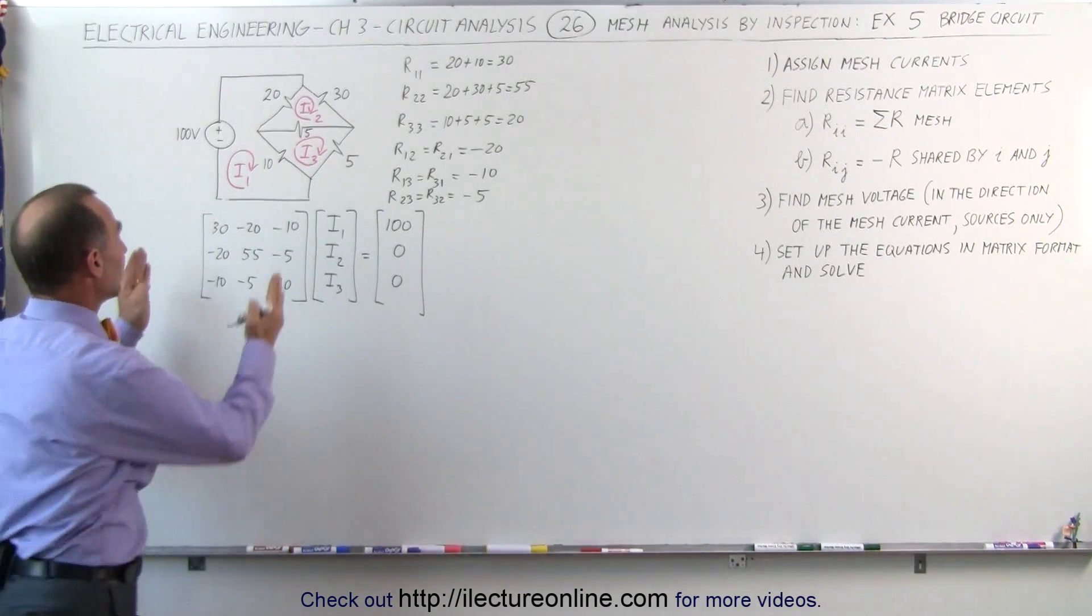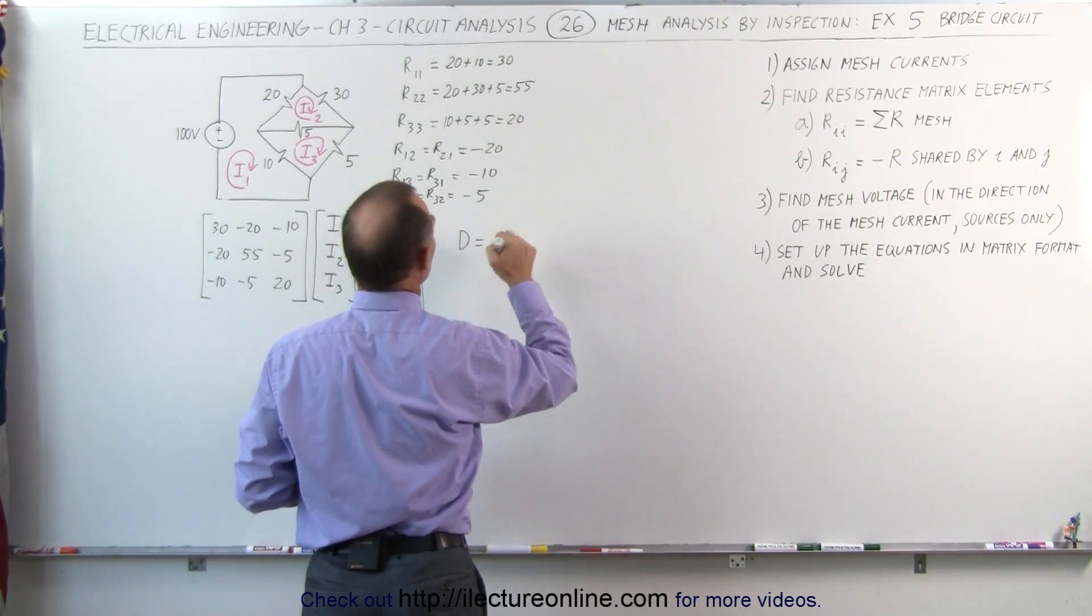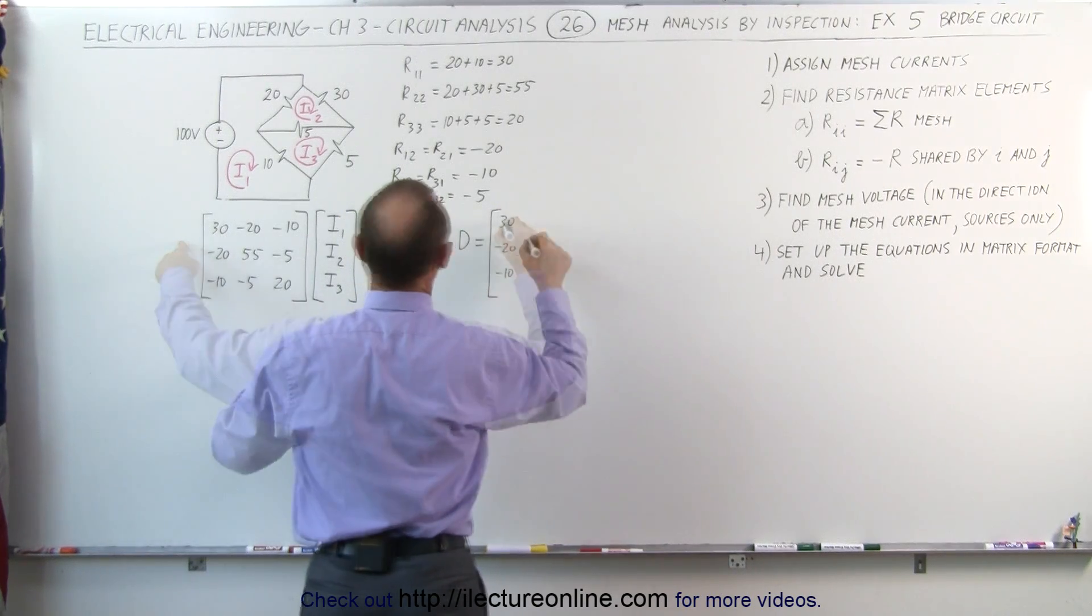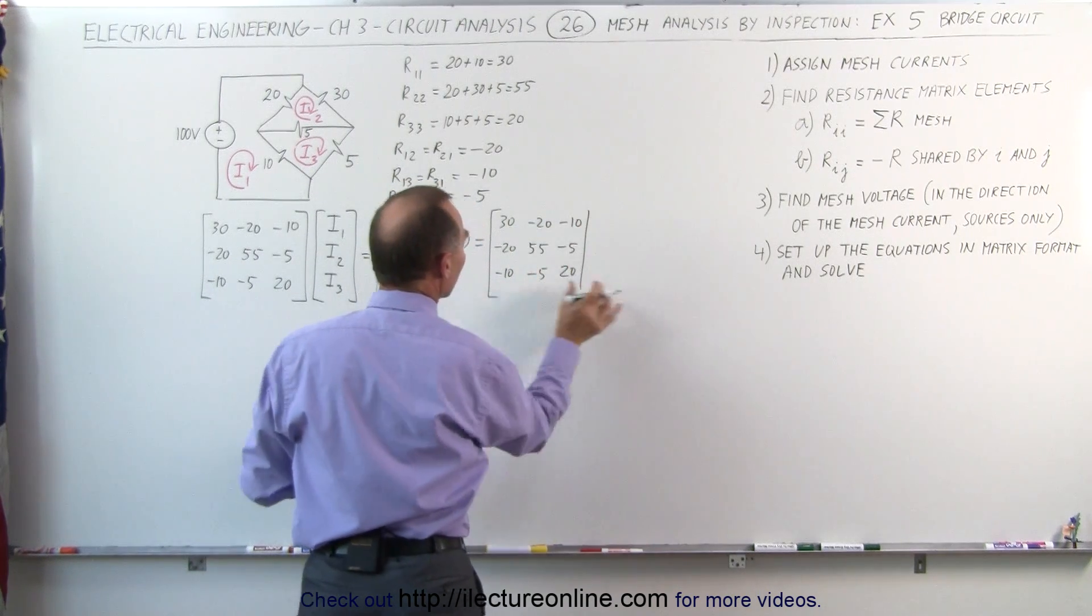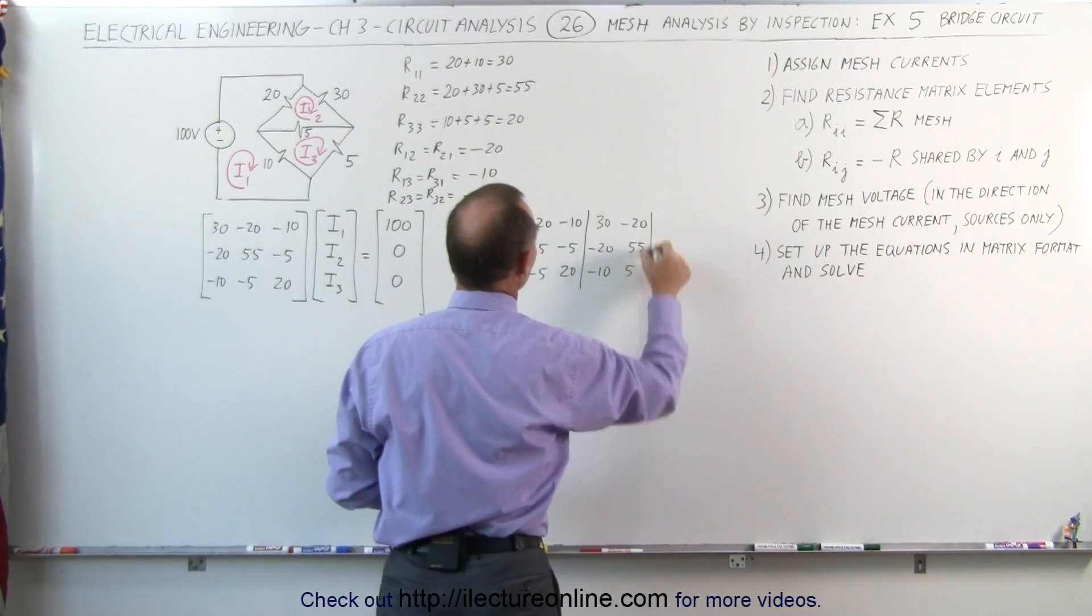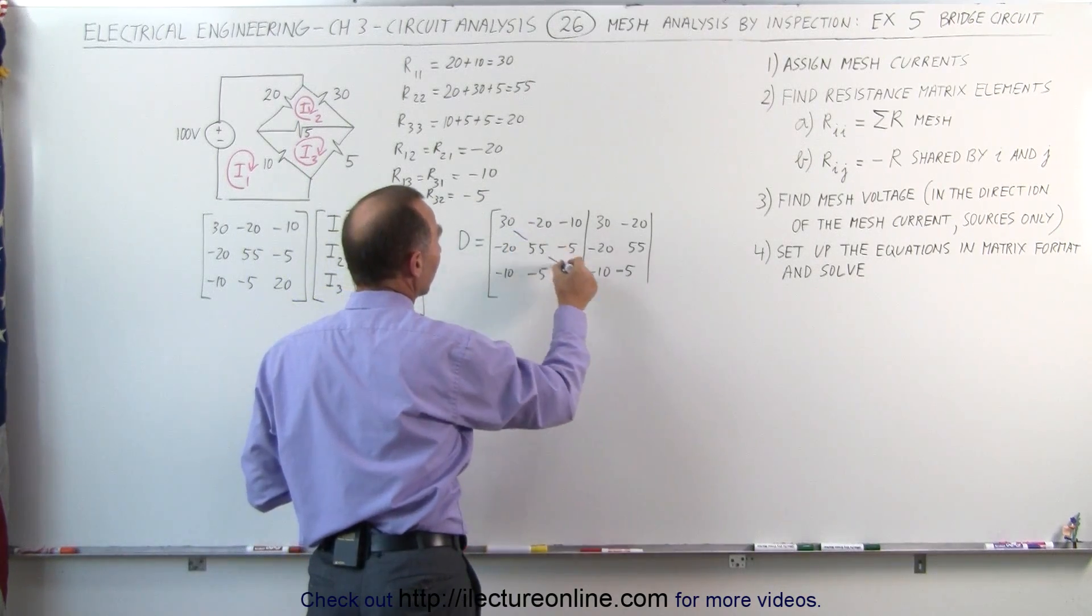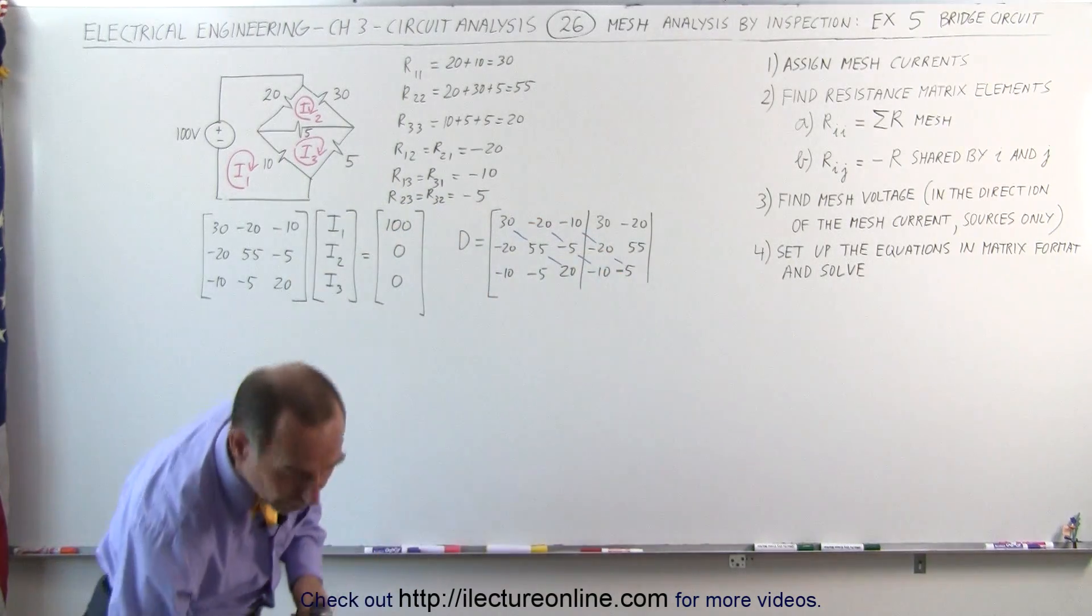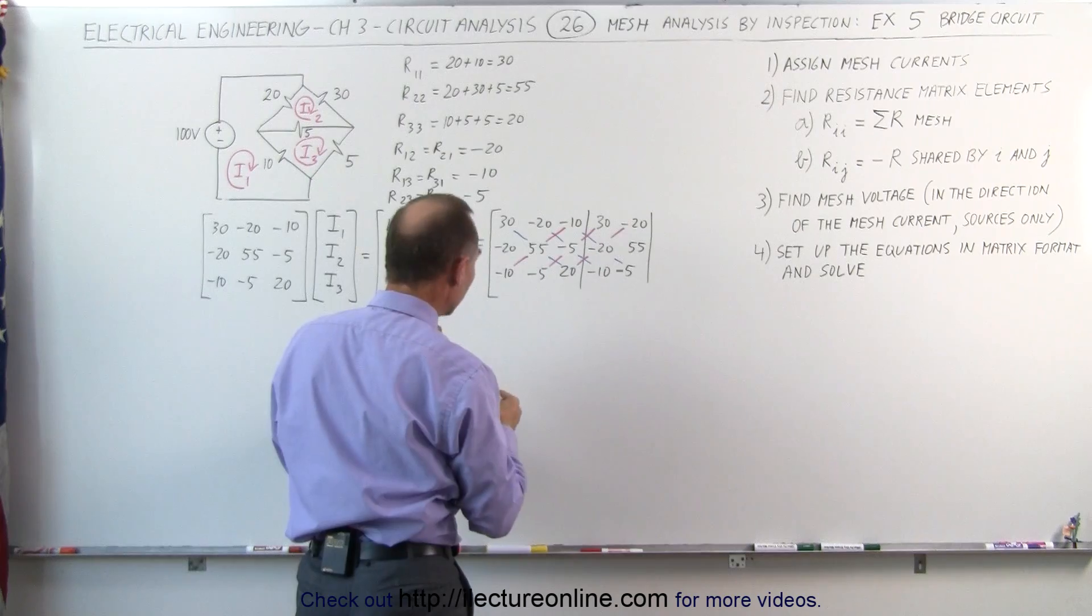Let's use the determinant method, which means we take this matrix right here. We say determinant is equal to, and that is equal to 30, minus 20, minus 10, minus 20, 55, minus 5, minus 10, minus 5, 20. And then we repeat two more columns: 30, minus 10, minus 20, 55. And so what we're going to do here, and using color helps, is by multiplying these elements together diagonally like this, we add them all together, and then we subtract when we multiply these elements together in this direction.